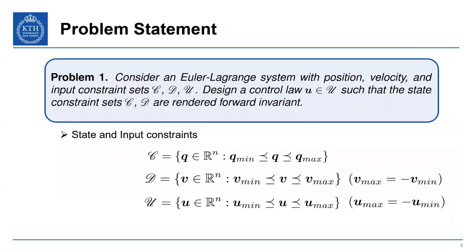Okay, so now we can get to the problem statement. So given some Euler-Lagrange system, we're going to look at position, velocity and input constraints of these forms. So these are box constraints on each of our position, velocities and inputs. For simplicity, we're going to say that V_max is minus V_min, and U_max is minus U_min, just to clarify the presentation.